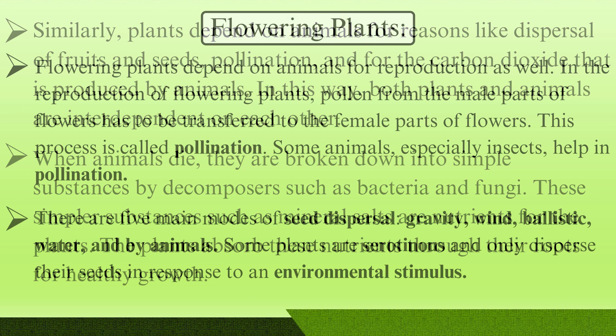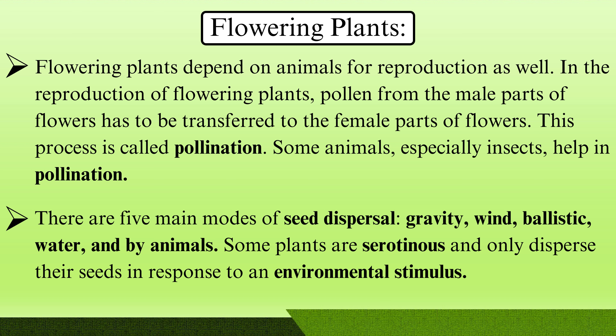Flowering plants depend on animals for reproduction as well. In the reproduction of flowering plants, pollen from the male parts of the flowers has to be transferred to the female parts of flowers. This process is called pollination. Some animals, especially insects, help in pollination.